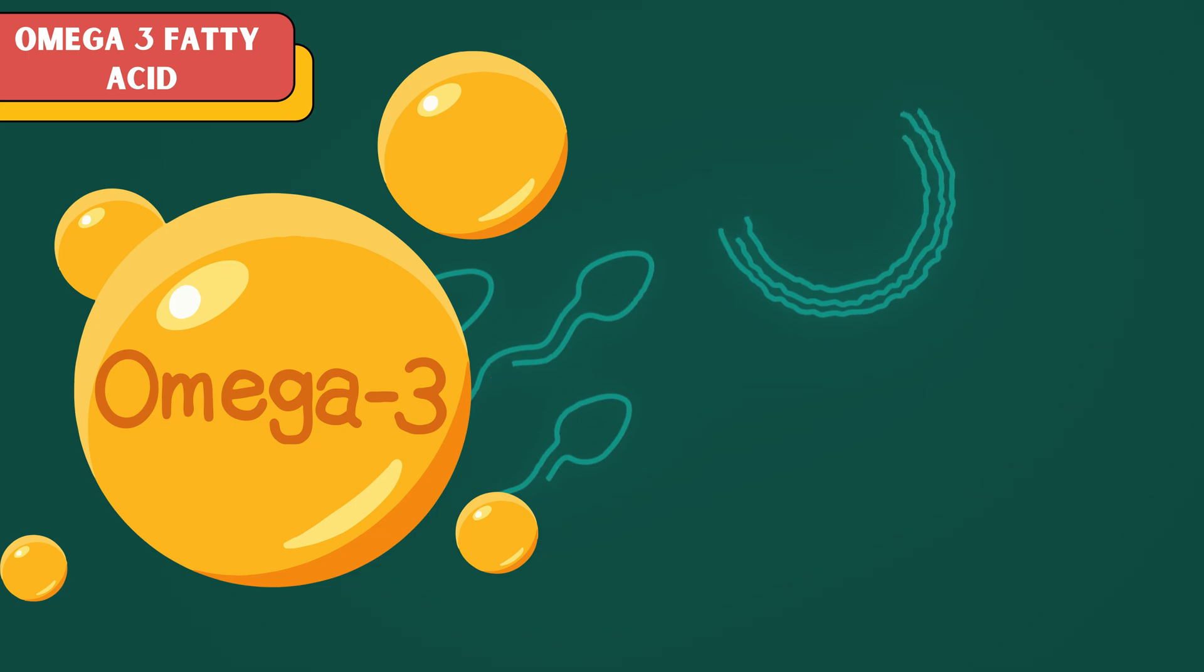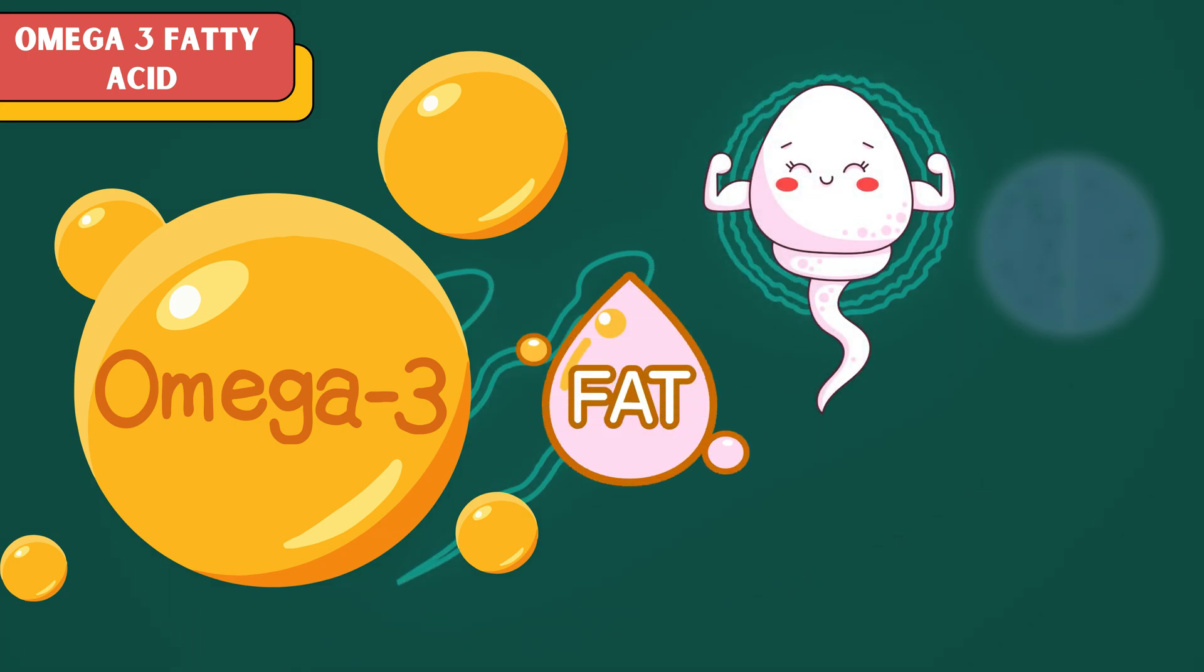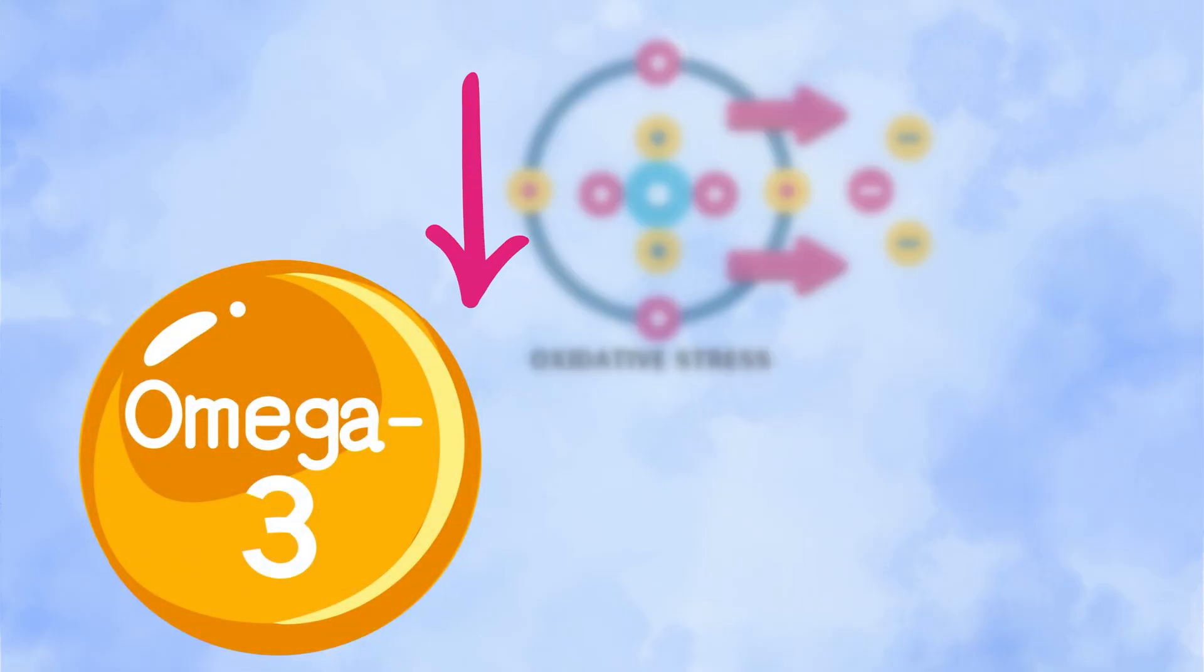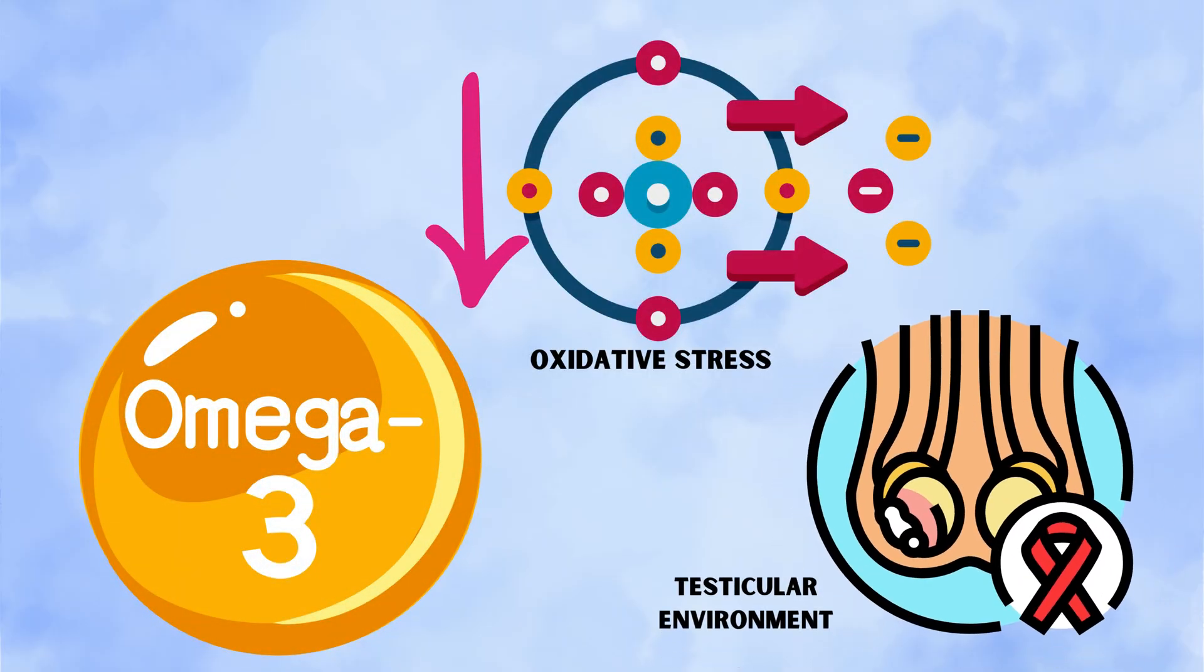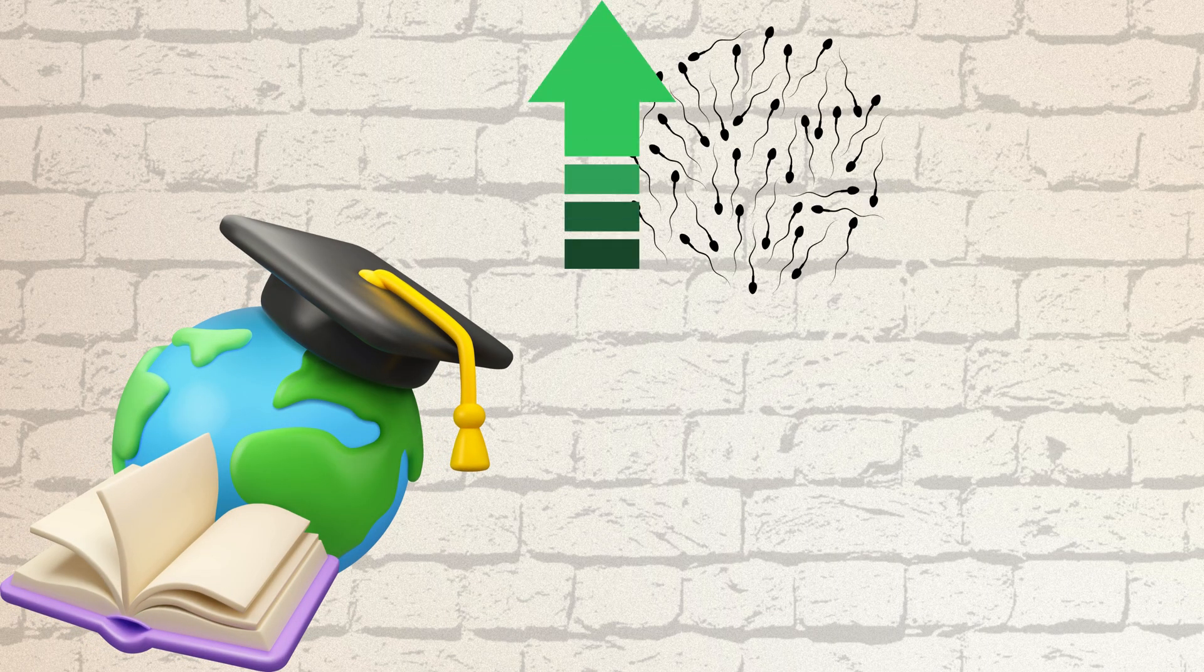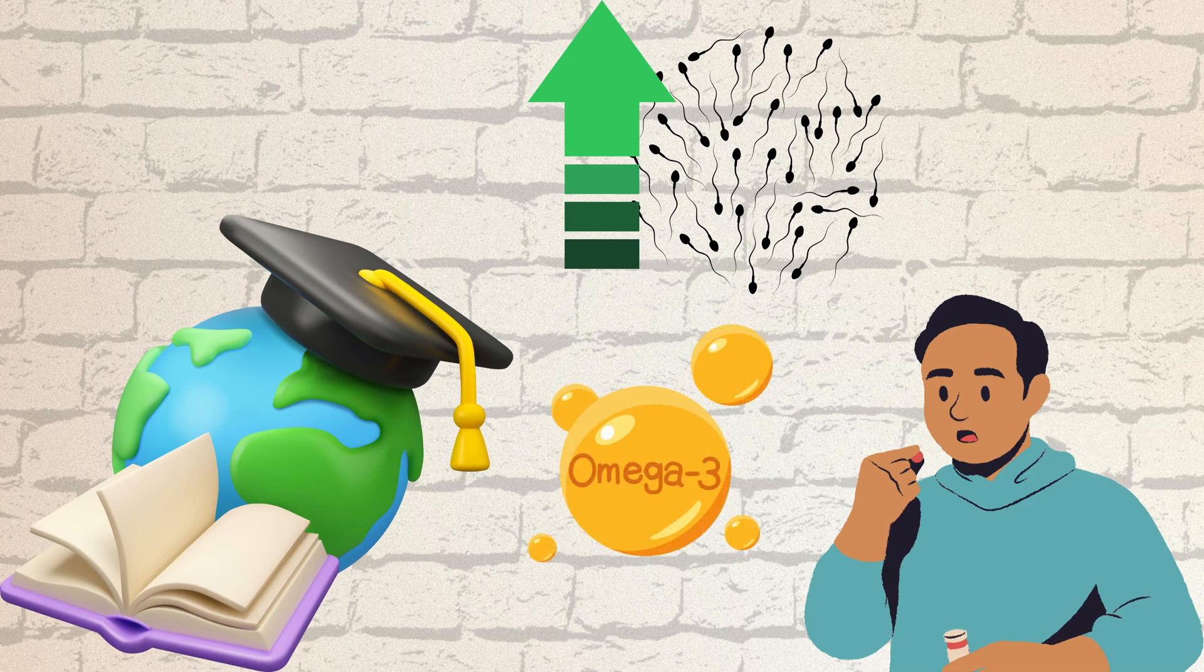Next is omega-3 fatty acids. These healthy fats improve sperm shape and motility by supporting cell membranes. Omega-3 reduces oxidative stress in the testicular environment. Studies show a significant increase in sperm concentration and overall count in men consuming omega-3 regularly.